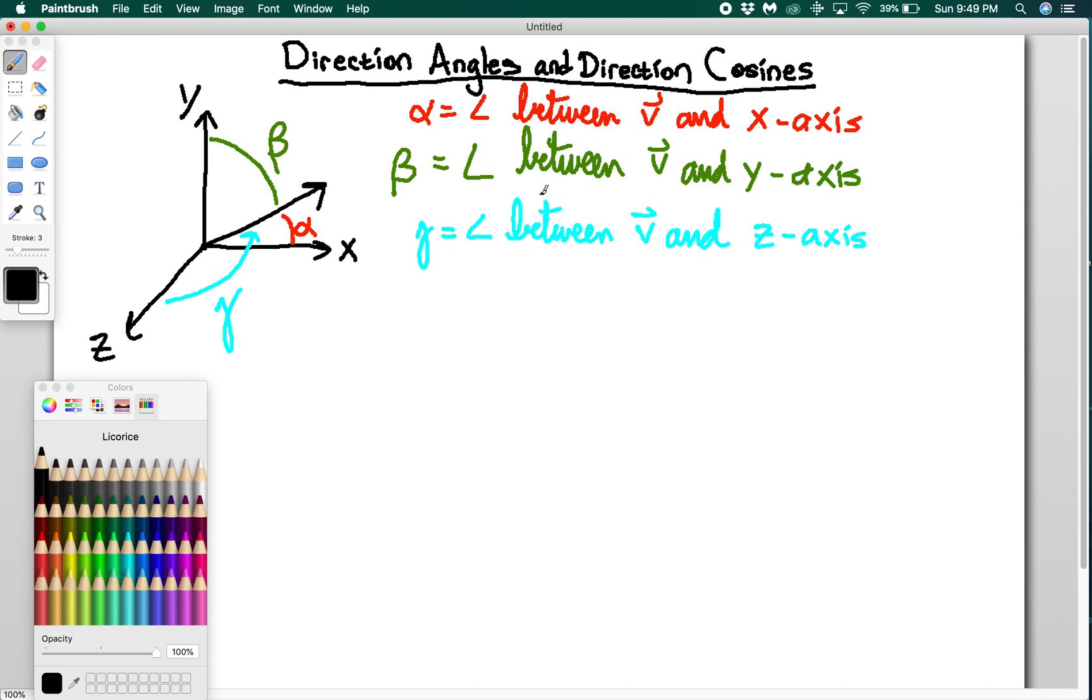So how do we actually get these? Well, I guess I should tell you what the direction cosines are. Direction cosines are simply the cosines of these angles. Why is that a thing? You'll find out in a moment.